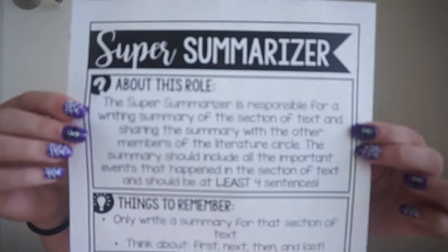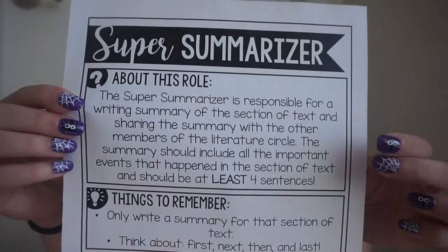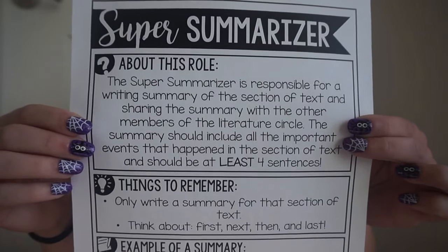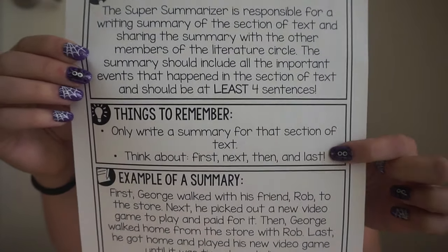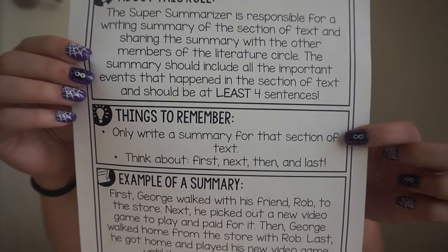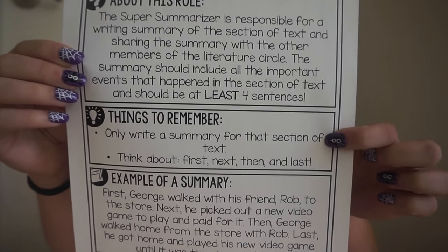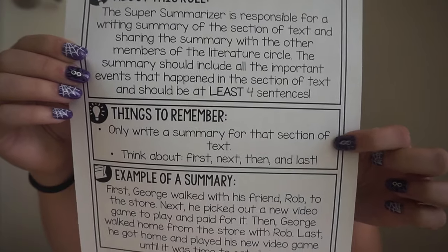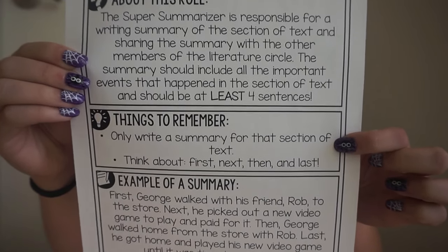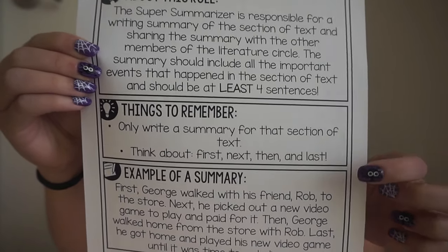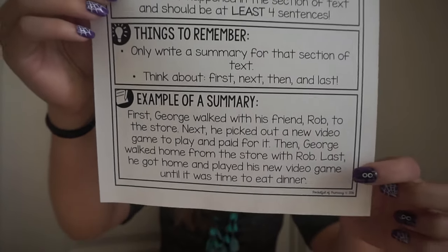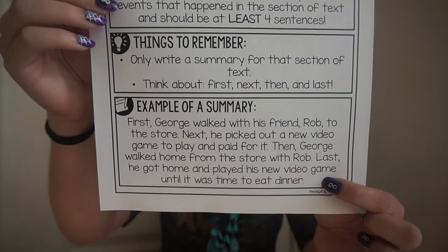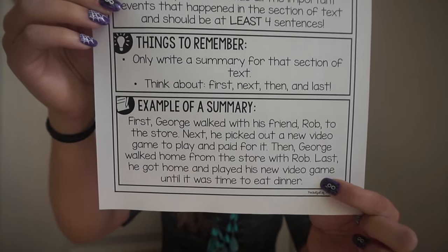The super summarizer has the same layout — they are responsible for writing a summary of the section of text using at least four sentences. Things to remember: only write the summary for that section, not the entire book so far — if you're organizing by chapters, just that chapter. I want them to think about what comes first, next, then, and last. I included a short example summary to show them the structure I'm looking for.